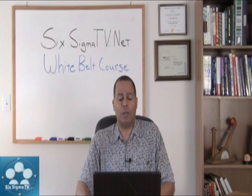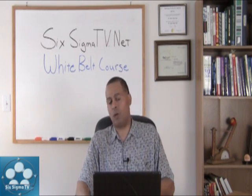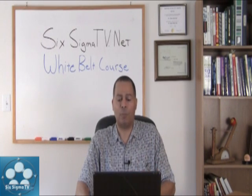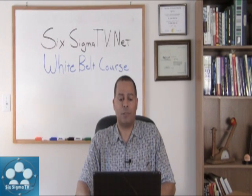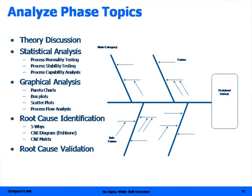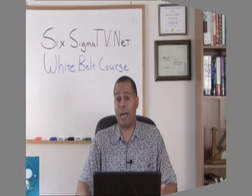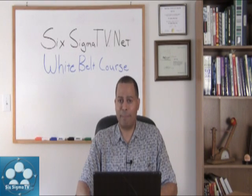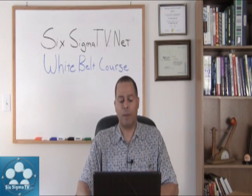In the analyze phase, the last thing you want to do is identify and validate those root causes, and that's what all of this analysis and data mining will help you do. Some of the topics we talk about include statistical analysis, normality testing, stability testing, box plots, scatter plots, root cause identification, five Whys, your C&E matrix, correlation, and fishbone charts — and then root cause validation.